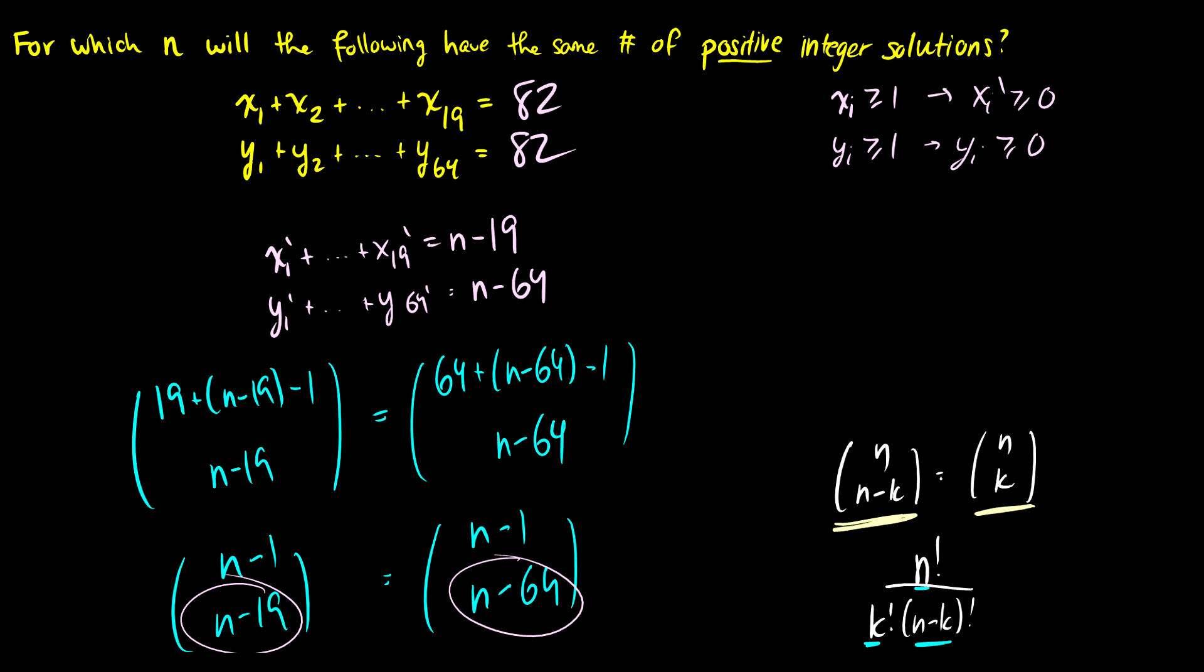And you can check this by plugging it back into the formula here. So this would be 82 minus 19, which equals 63. This would be 82 minus 64, which equals 18, I believe. And if we take 19 plus 63 minus 1 choose 63, that'd be equal to 64 plus 18 minus 1 choose 18. So we can use the formula again to check to see if they're true. Okay, so that was the second question. A little bit more abstract and difficult, especially if you don't know how to work with combination with repetition. If you're able to do this before me, you probably know combination with repetition pretty well, so you should be good for that section on your exam.